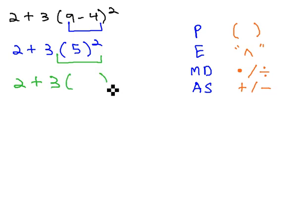2 plus 3 times 5 squared is 25, and then finally after the exponents are done, we're ready to do any multiplying or dividing on the problem. In this problem, that would be 3 times the 25.